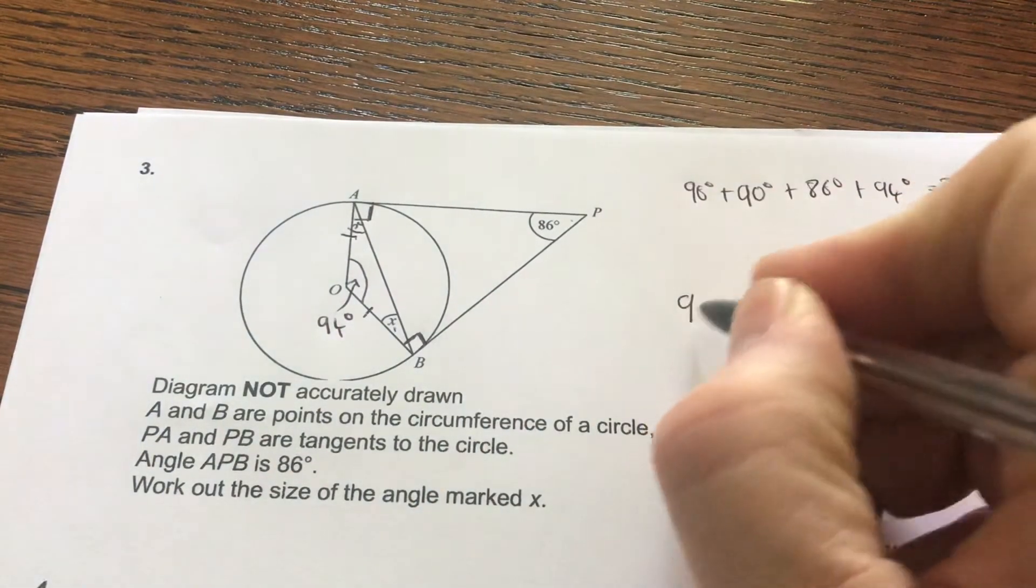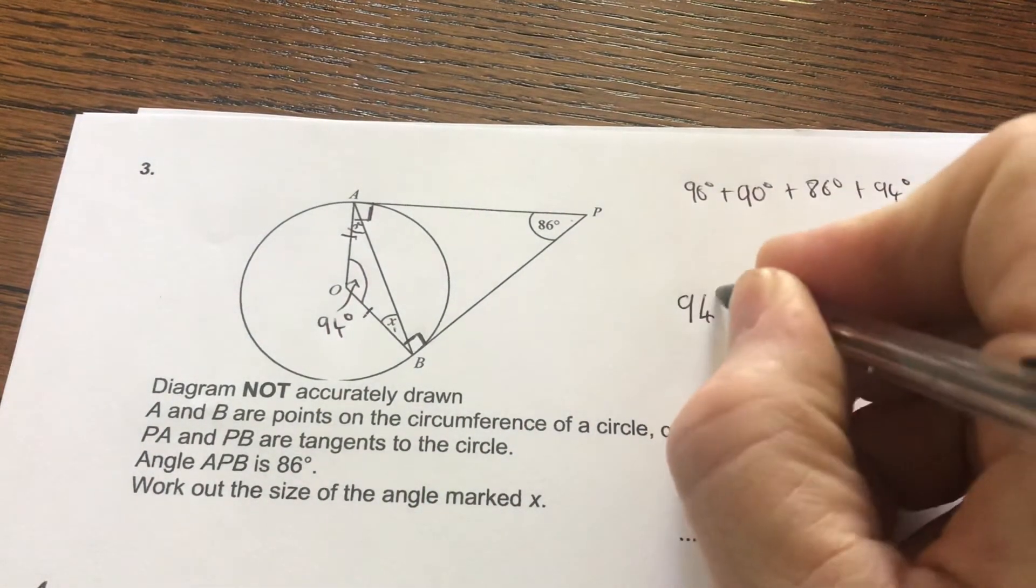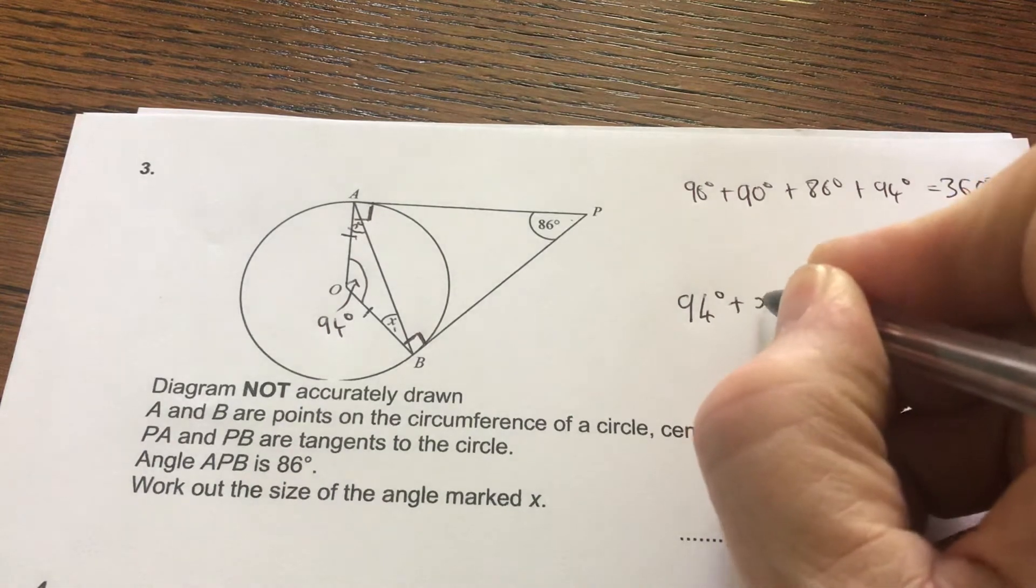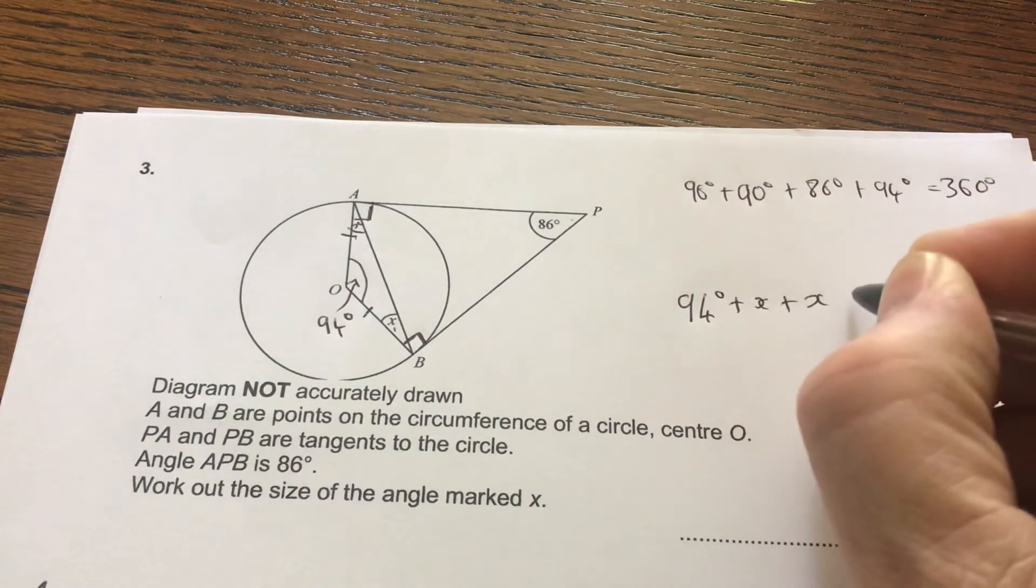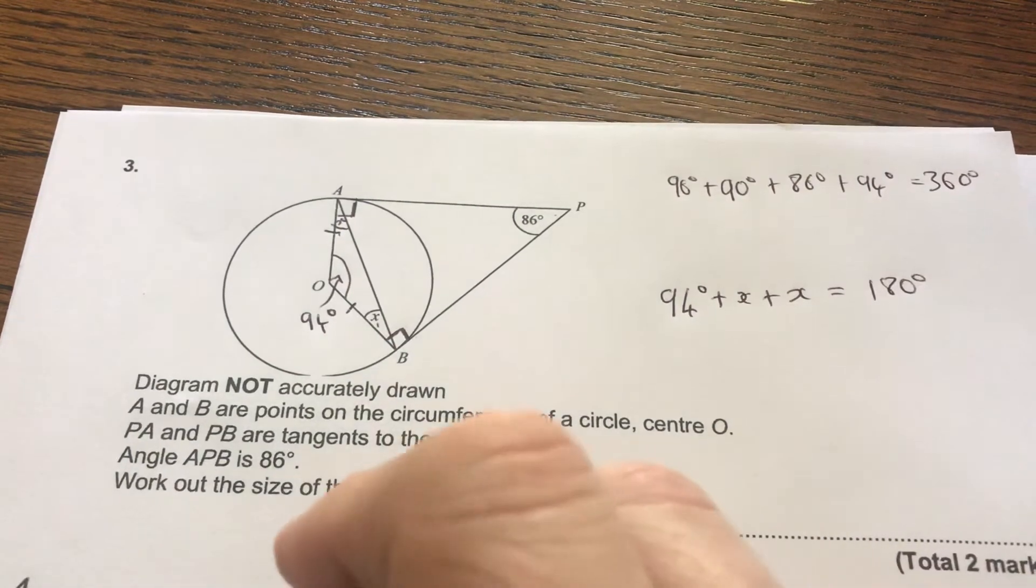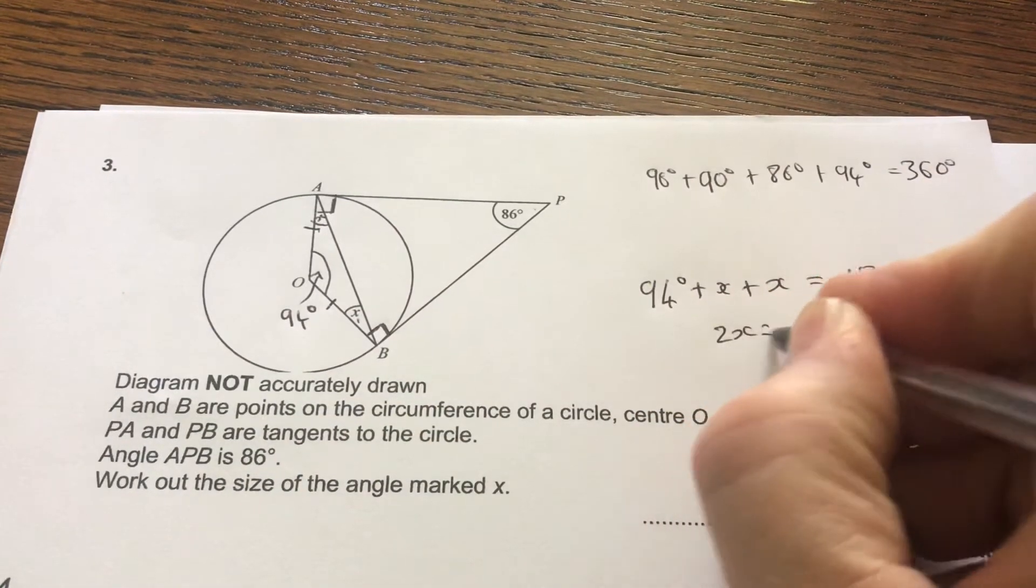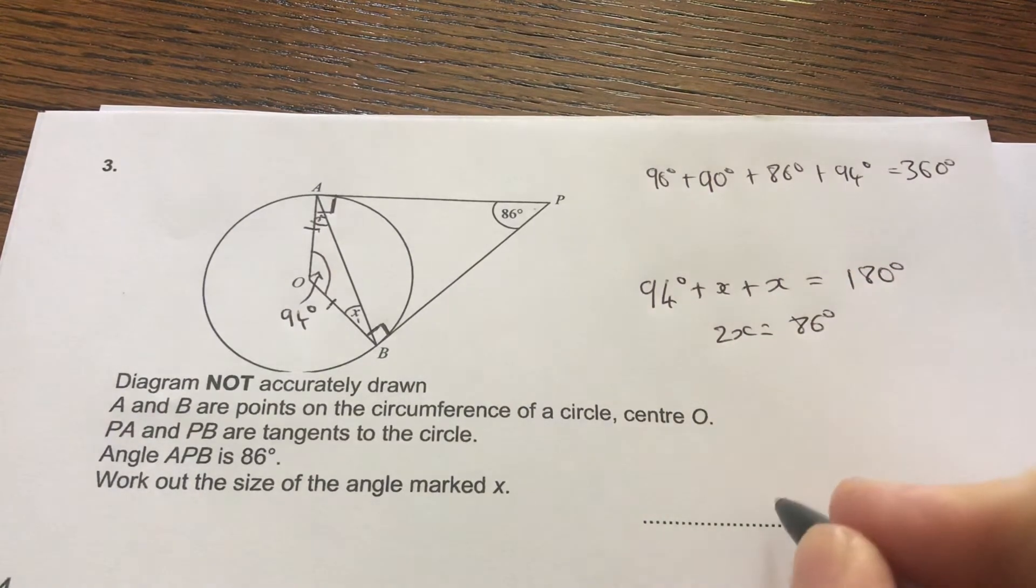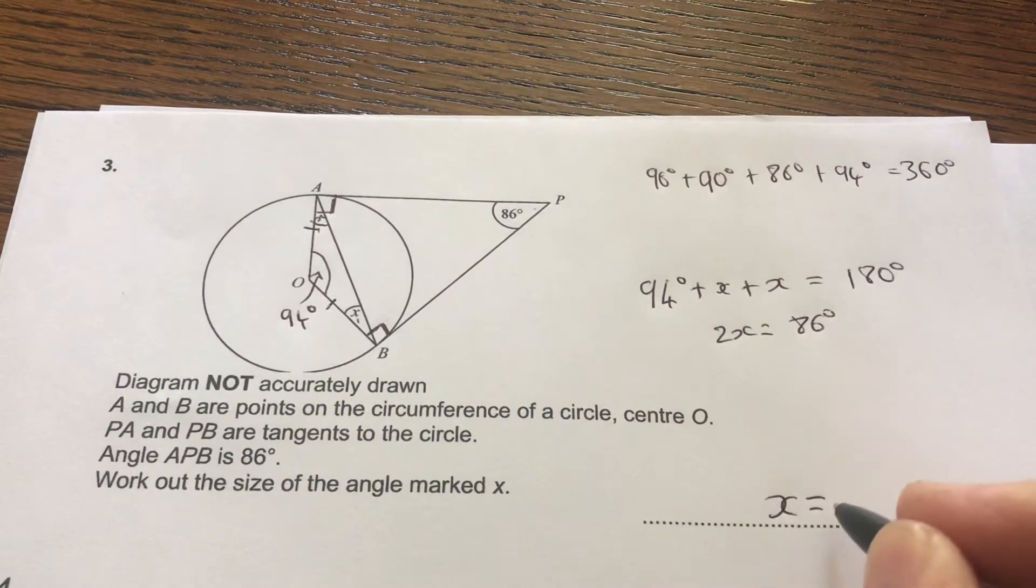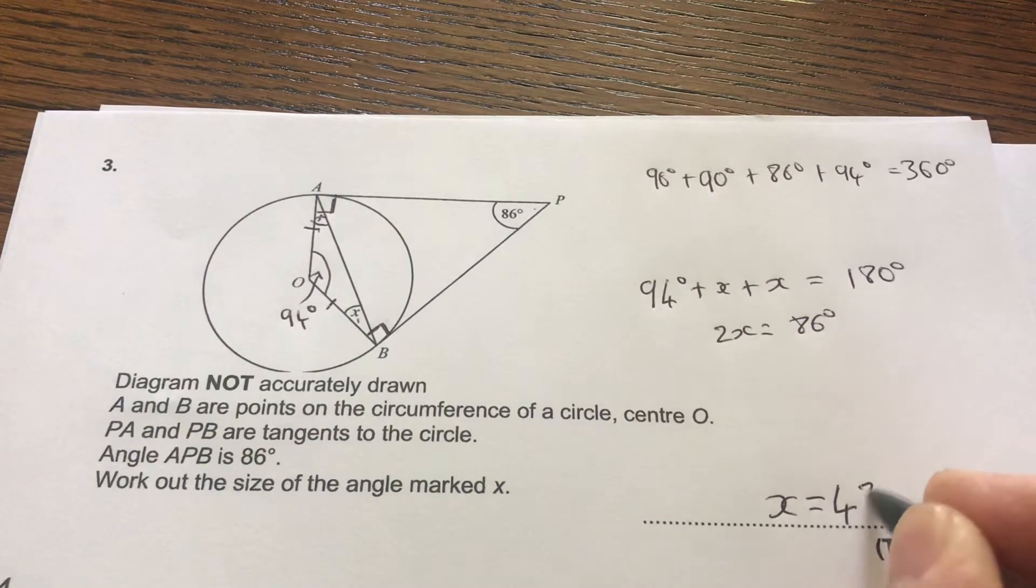So x, you've got 94 degrees, add x, add x equals 180 degrees. 2x will equal 86. And x therefore is 43 degrees.